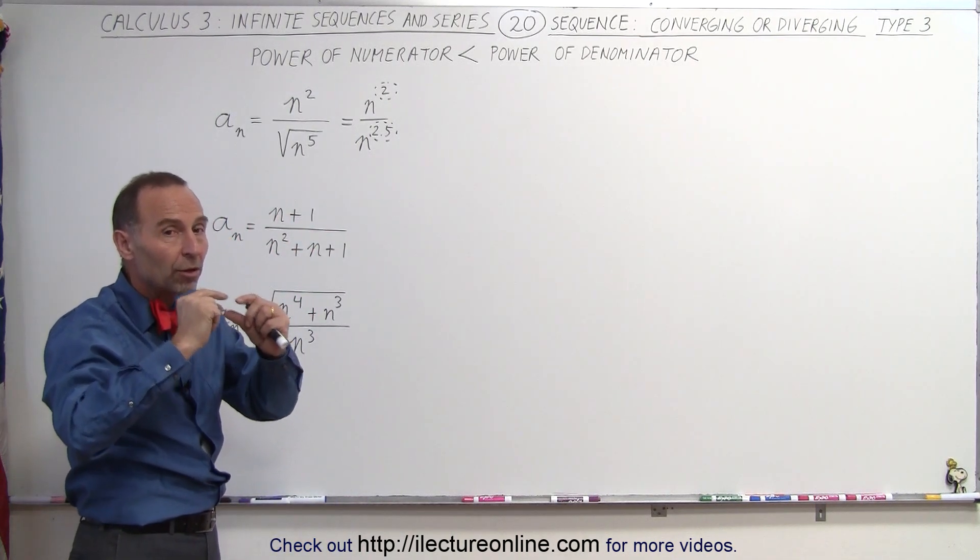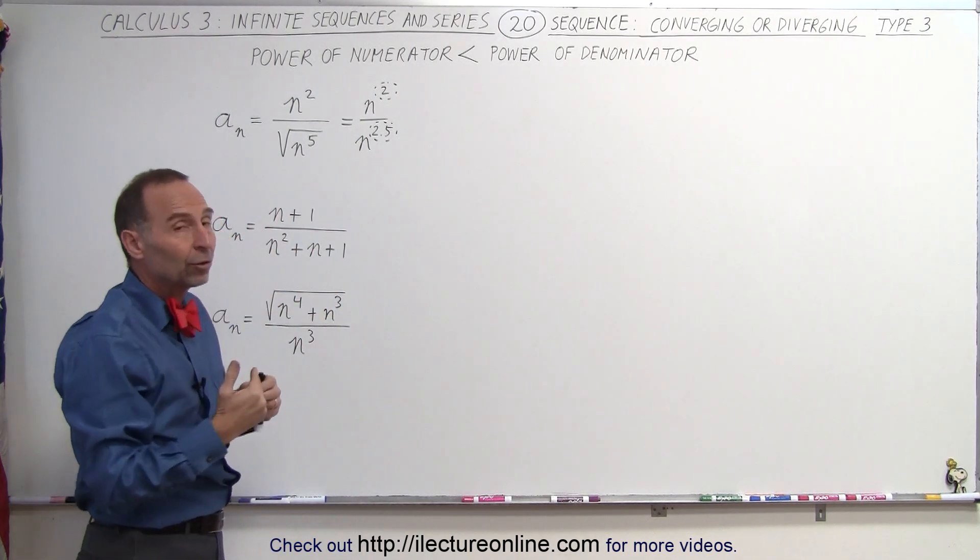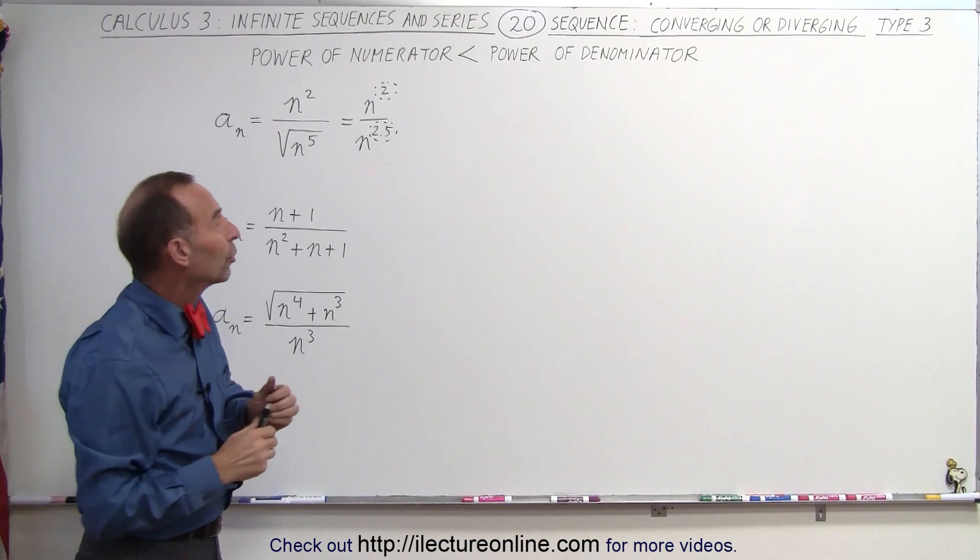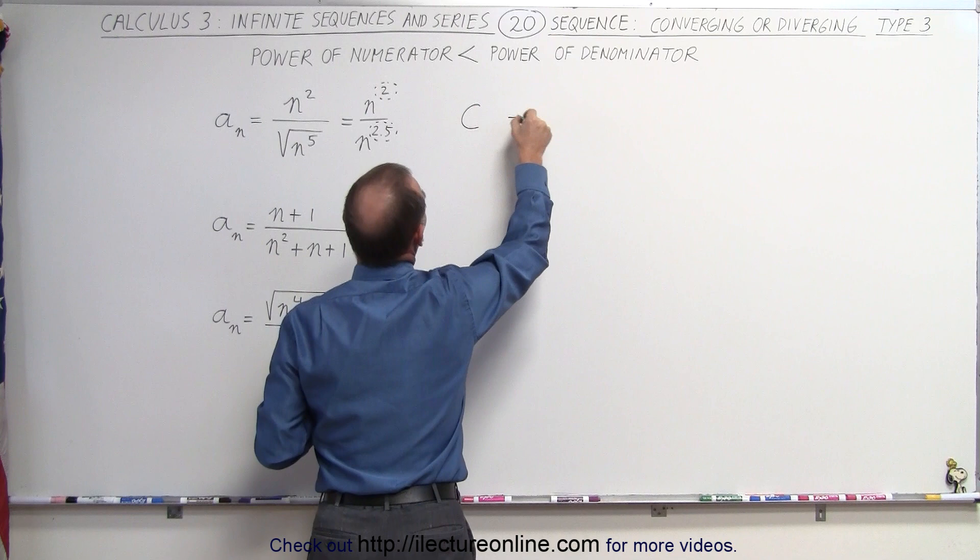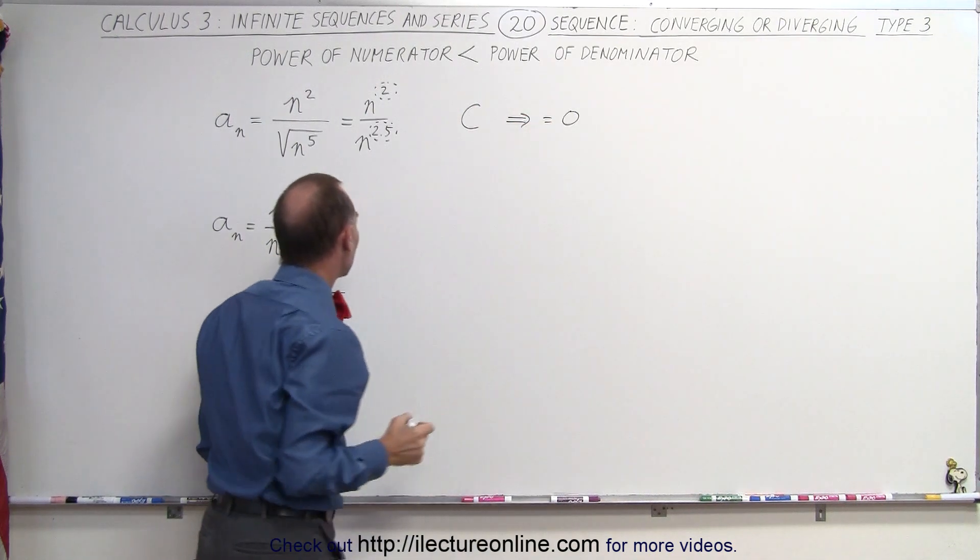That ratio becomes smaller, smaller, smaller, and in the limit, as n goes to infinity, that ratio goes to zero. So in other words, we know that it converges, and the number will be equal to zero in the end.